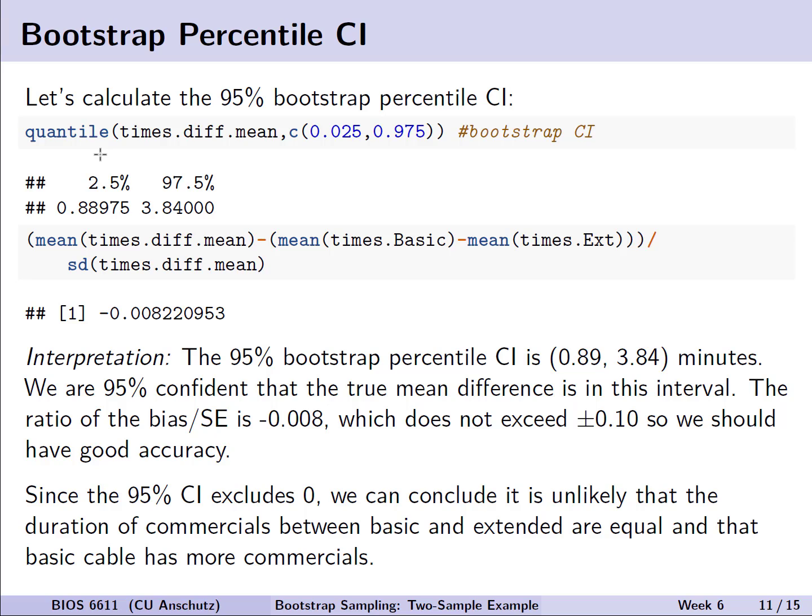We see here that we now have a 95% bootstrap percentile interval that is 0.89 to 3.84 minutes. So we are 95% confident that the true mean difference lies within this interval. We can also note that the ratio of our bias divided by our standard error of our bootstrap distribution is pretty small at negative 0.008, which does not exceed plus or minus 0.1. So we should have good accuracy for this bootstrap percentile confidence interval.